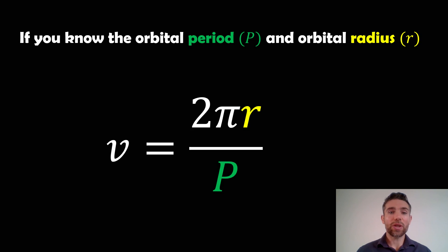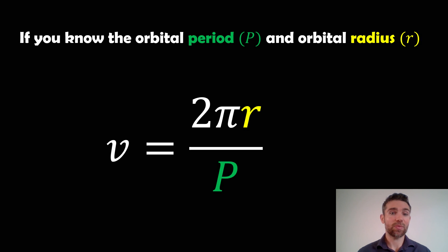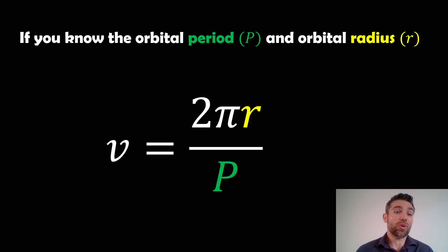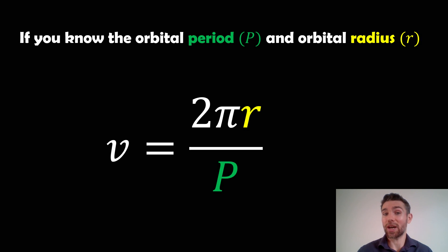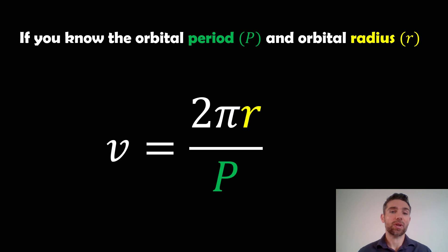Now, if you know the orbital period and the orbital radius, you can also get the orbital velocity. Because you know the circumference of the circle, which is 2πr, and you would also know the orbital period. So it's basically going to be the distance travelled divided by the time. You can also get the orbital velocity that way — it depends what information you have. But there are two ways you can get that orbital velocity.